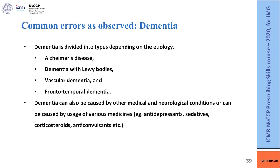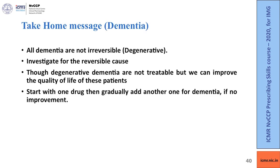Supplementary material provides differentiating features for these types of dementia. Remember, dementia can also be caused by other medical or neurological conditions, or by exposure to medications like antidepressants, sedatives, corticosteroids and anticonvulsants. Drug history and other reversible causes must be ruled out to provide effective treatment.